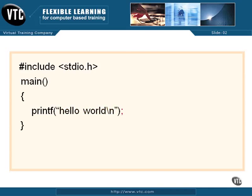The semicolon at the end of the line is very important — that is the end-of-statement character and it has to be there for that printf to work. It says this is a piece of work that you need to do. We're not defining another function; we're actually causing some work to be done. So that semicolon tells the compiler: this is a statement for you to execute.